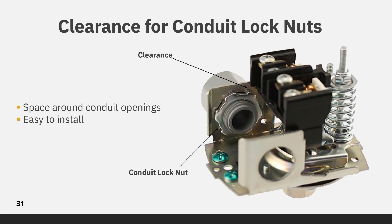Many pressure switches on the market have very little or in some cases no clearance for conduit lock nuts, sometimes referred to as jam nuts. This makes it very difficult to tighten due to interference with the terminal block. Beauchart's custom terminal block design provides clearance around the conduit openings making it easier to install.